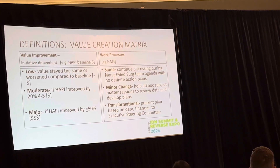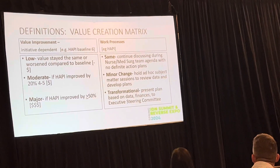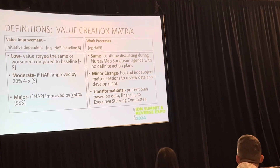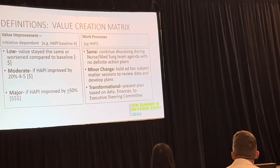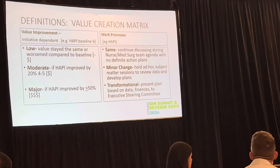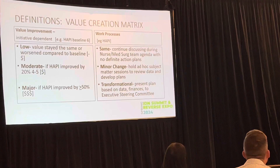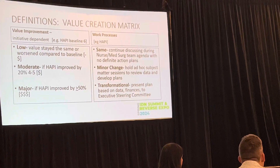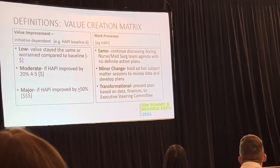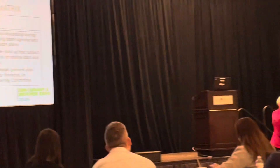On the value improvement side of the value creation matrix, low means the value stayed the same or became worse compared to baseline. One dollar sign means it's like a menu — if you went to a restaurant and it gave you four dollar signs, you'd say 'I can't afford that restaurant today.' One dollar sign means there might be extra dollars you're spending somewhere.